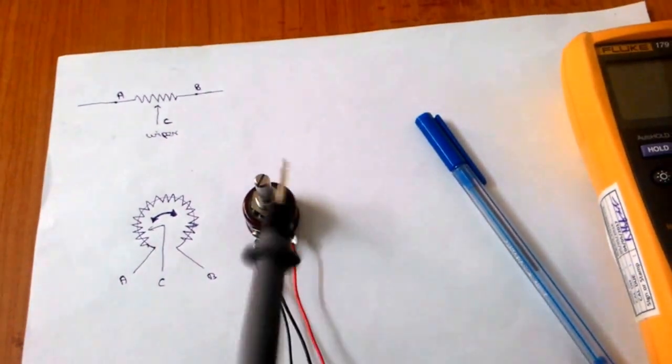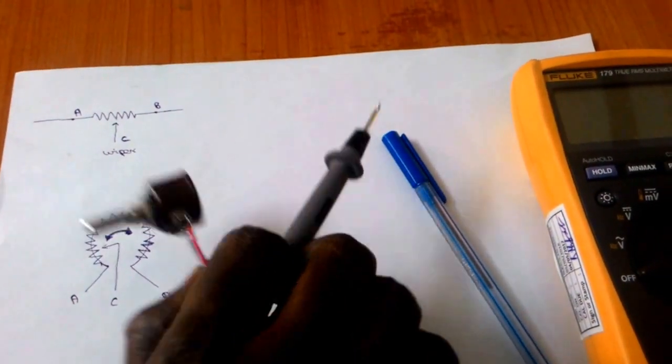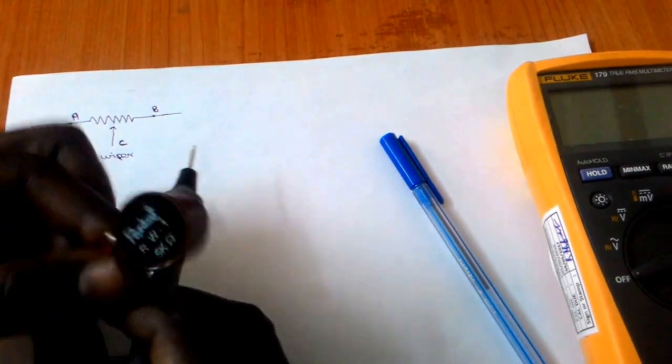Here in our real case the resistance across A and B is 5 kilo ohms, right? That is what I saw here, it is 5 kilo ohms.